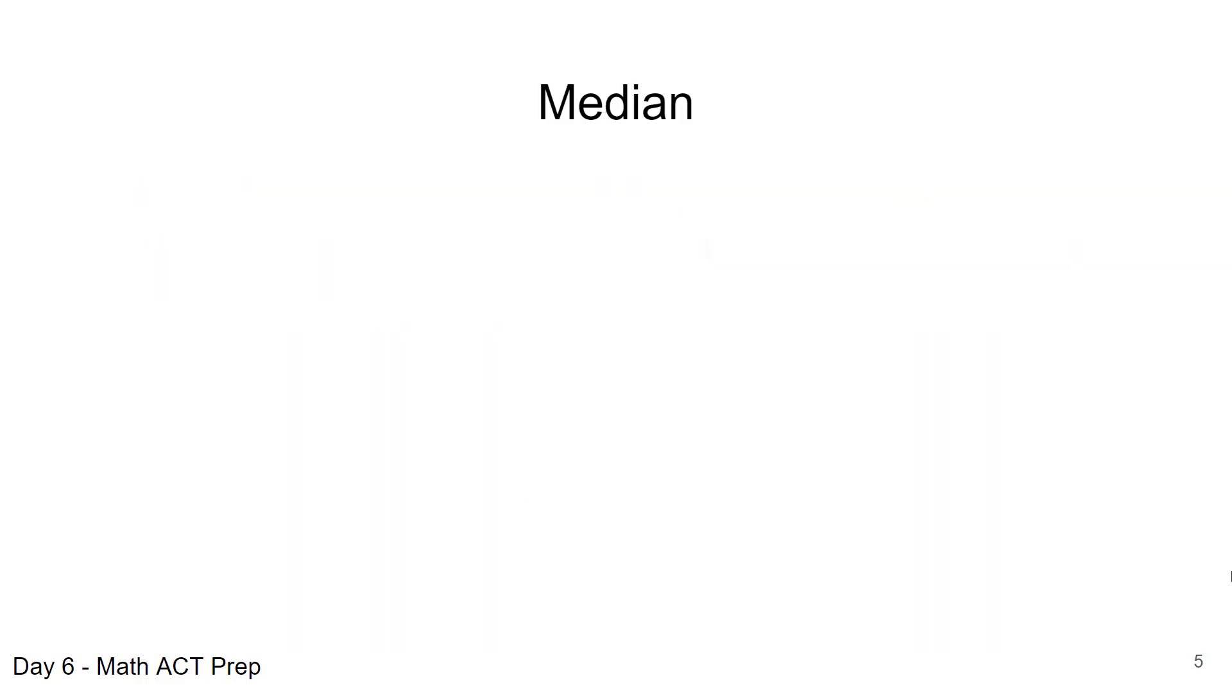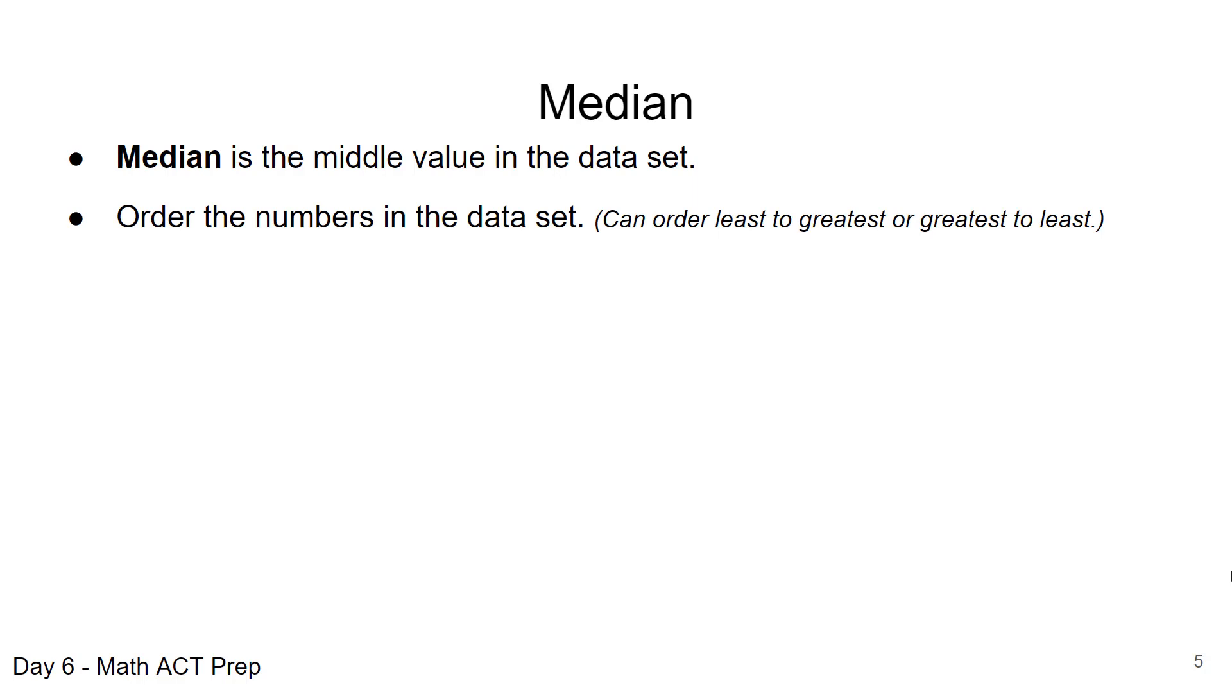The next area we're going to look at is median. When we're talking about median, that is just the middle value in the data set. There's a process you can follow to find the median. I normally take the values in the data set and order them. You can order from least to greatest or greatest to least, just be consistent in what you're doing.